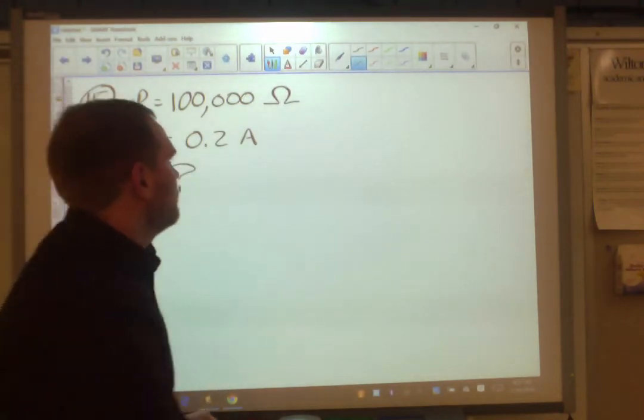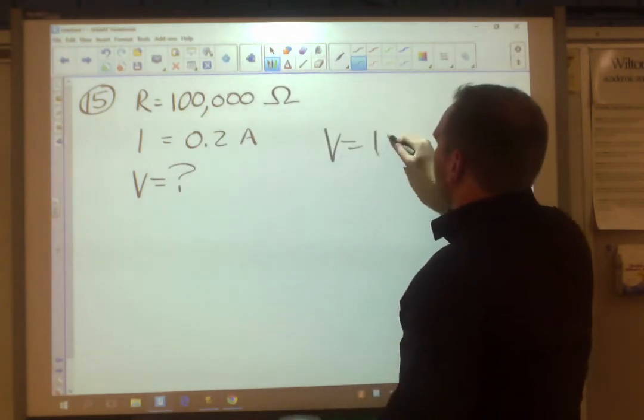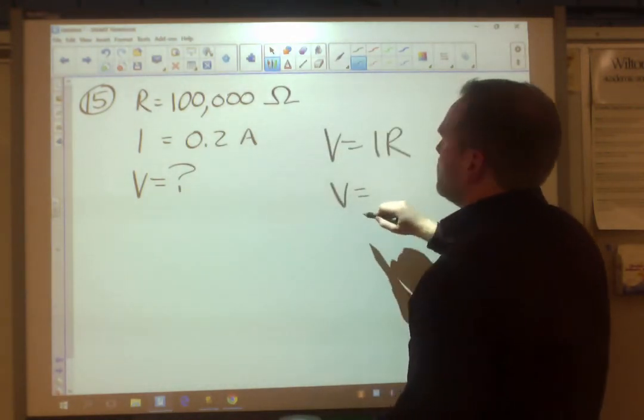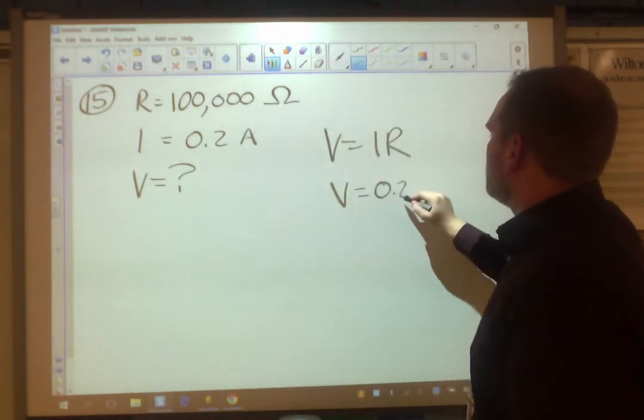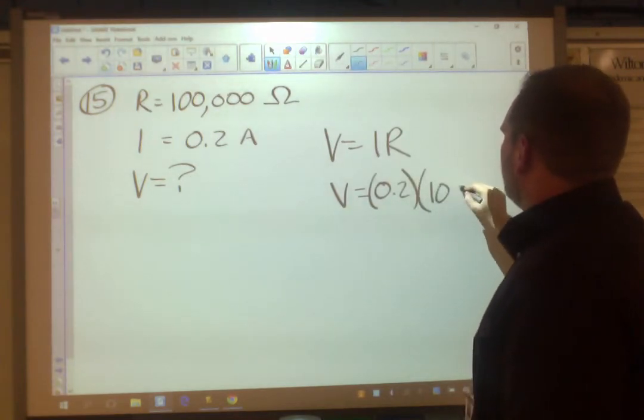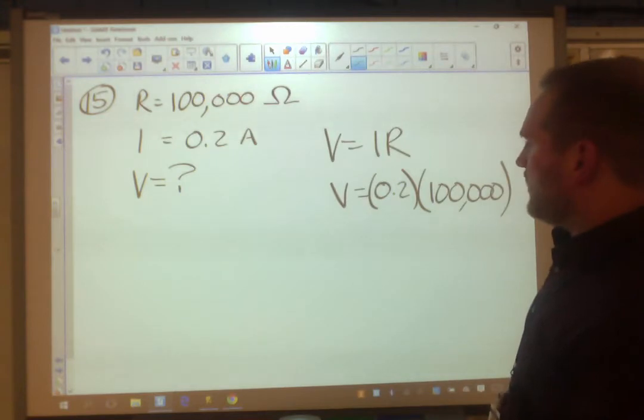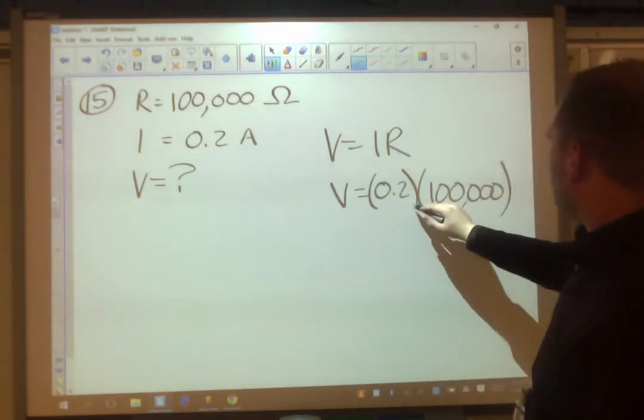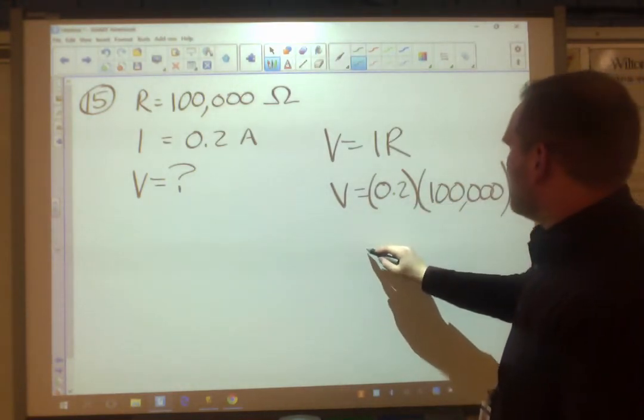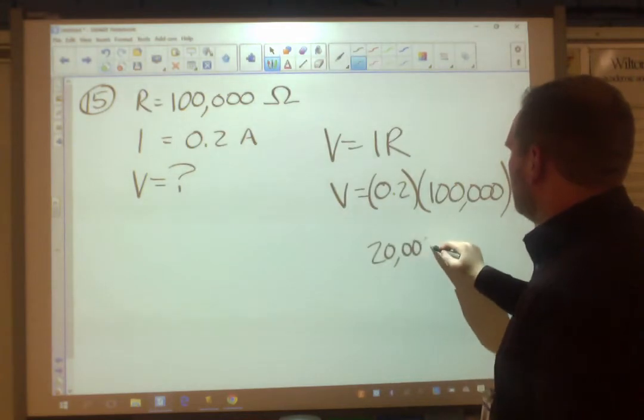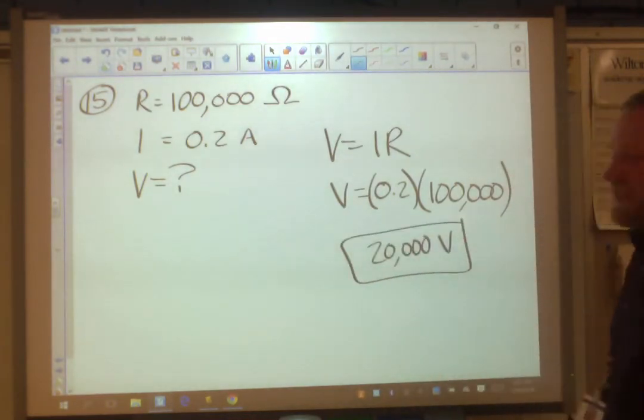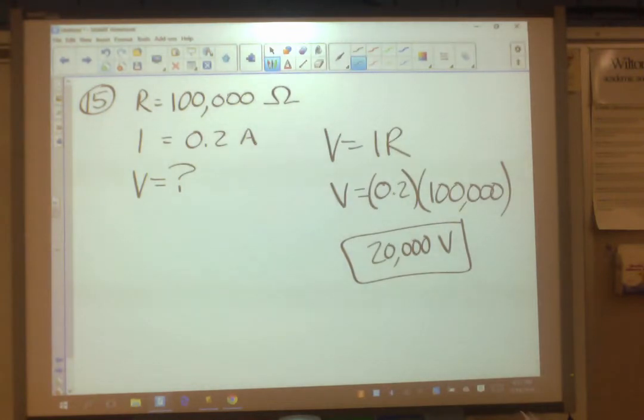Voltage equals question mark. V equals IR. V equals 0.2 amps times 100,000 ohms. 0.2 times 100,000, that means 20,000 volts. 20,000 volts, assuming you're dry.